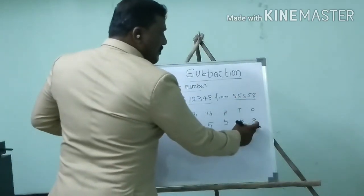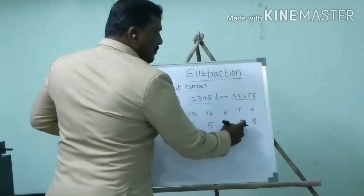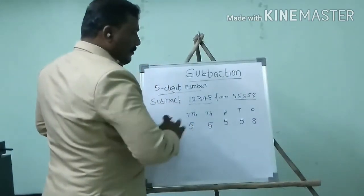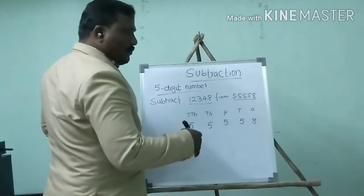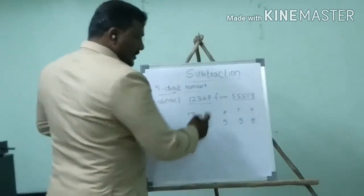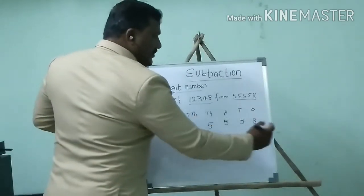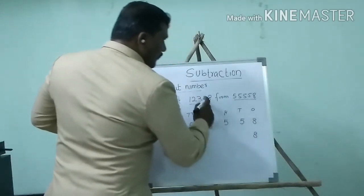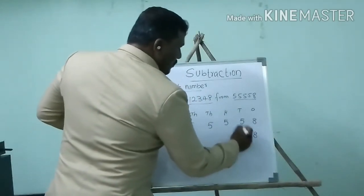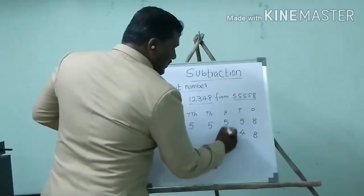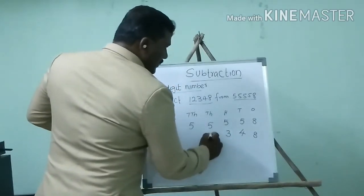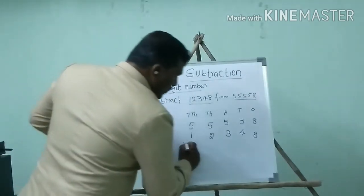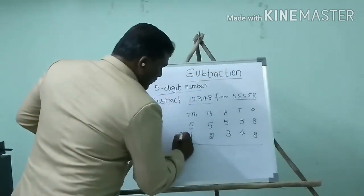So 8 is in the ones place, 5 is in the tens place, 5 in the hundreds place, 5 in the thousands, 5 in the ten-thousands place. Now we have to place the subtrahend. Subtrahend is placed right to left: 8 in the ones place, 4 in the tens place, 3 in the hundreds place, 2 in the thousands place, 1 in the ten-thousands place.